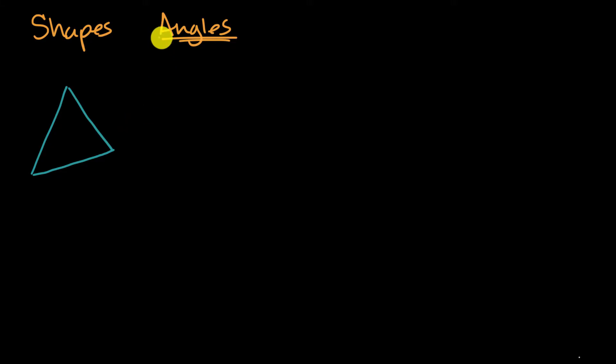but it also has three angles. Now, what are the angles? Well, for a shape like this, you can think of an angle as where two of the sides come together. So for example, this right over here is an angle because two of the sides have come together there. This side and this side come together at that point. So that's an angle.